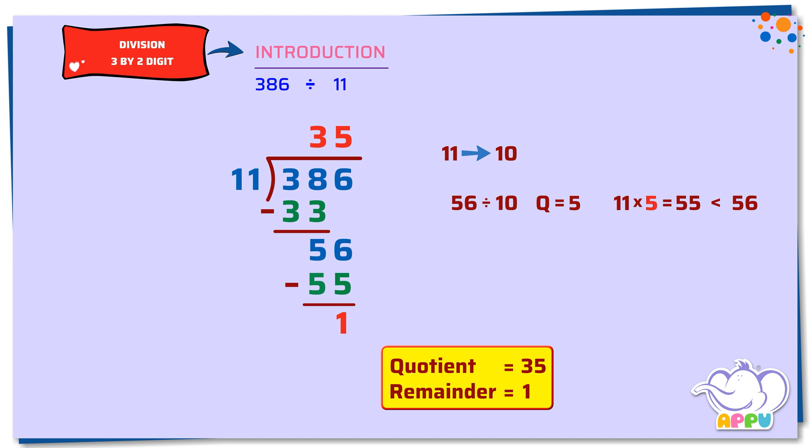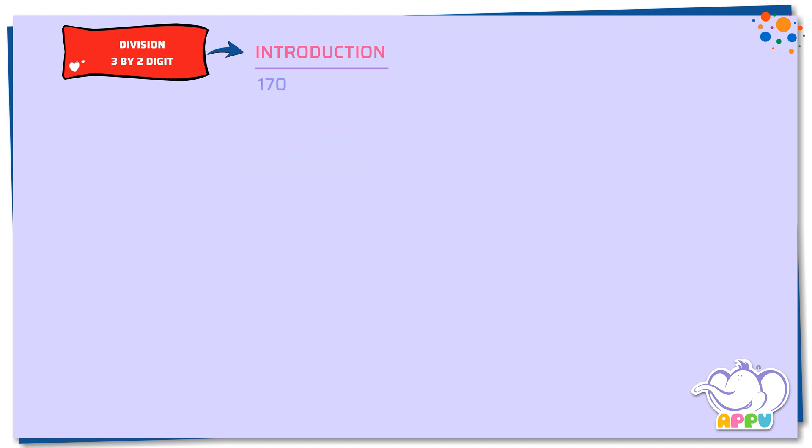Let's look at another example. 170 divided by 27. We write the division bracket and write 27 outside the bracket and 170 inside the bracket.